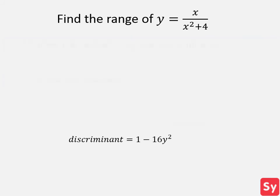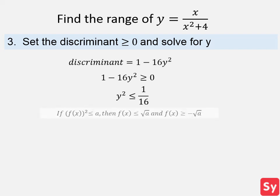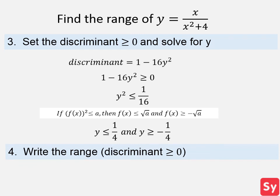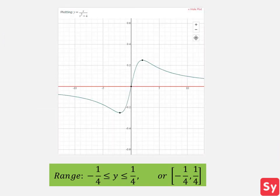Next step, we set the discriminant greater than or equal to 0 and solve for y. We add 1 to each side and then divide each side by negative 16. We next use this identity to solve for y. We get y is less than or equal to 1 fourth and y is greater than or equal to negative 1 fourth. Lastly, we write the range, which is when the discriminant is greater than or equal to 0. So the range is when y is greater than or equal to negative 1 fourth and y is less than or equal to 1 fourth. Let's look at the graph of this function to verify our range.